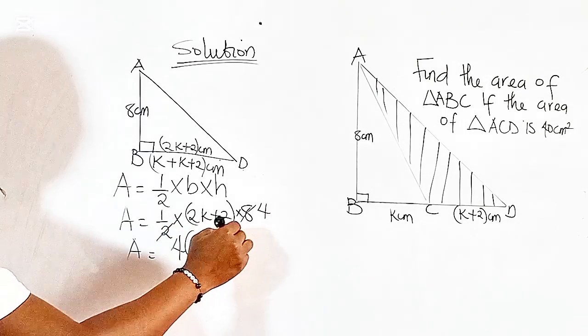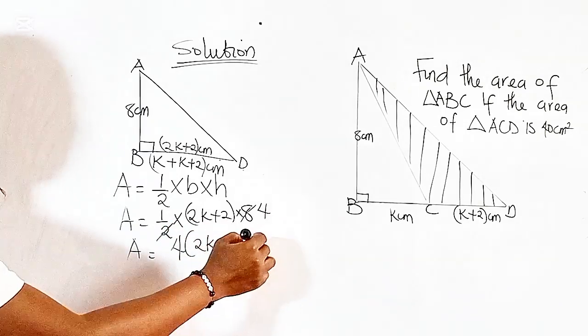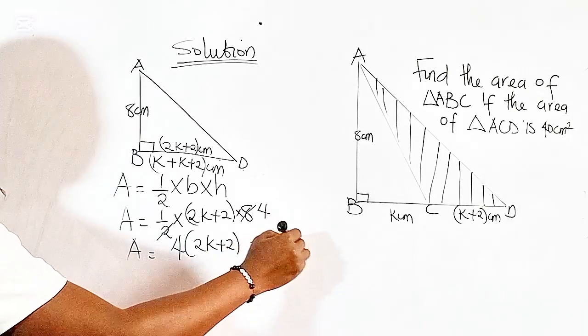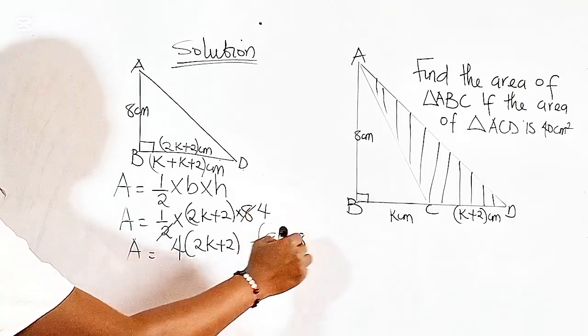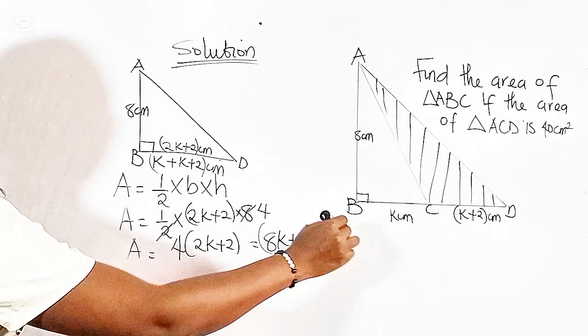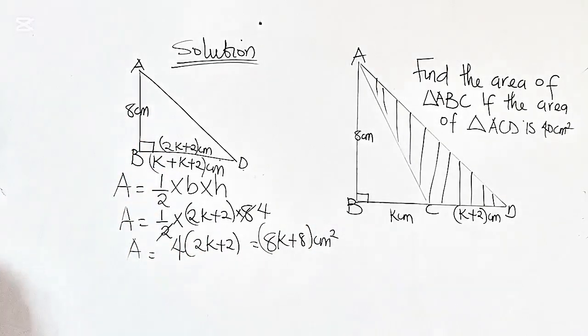So we have the area equal to 4 brackets 2K plus 2. If we open the bracket, we have 8K plus 8 cm squared as the area of triangle ABD.